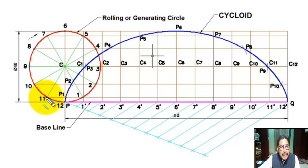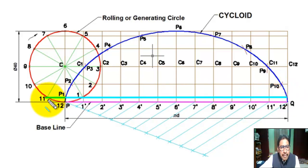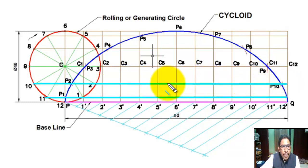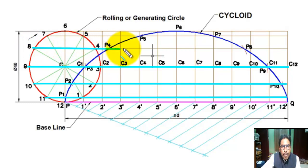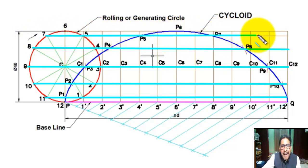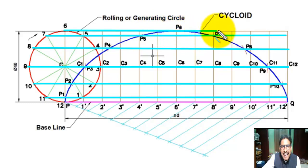Draw horizontal lines from division points 1 and 11, from 2 and 10, from 3 and 9, from 4 and 8, from 5 and 7, and from 6 — the horizontal center line.